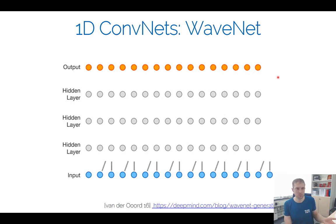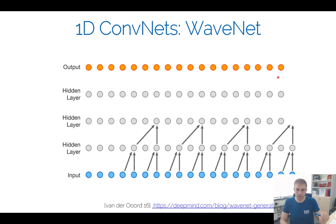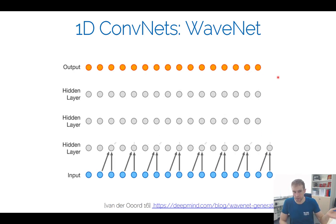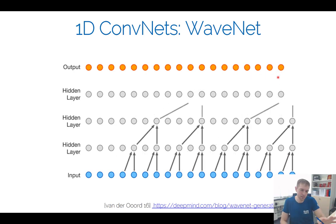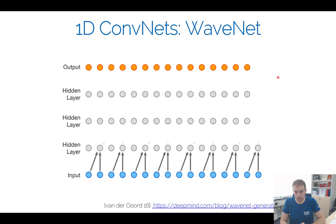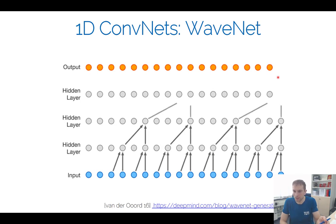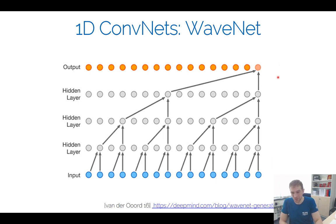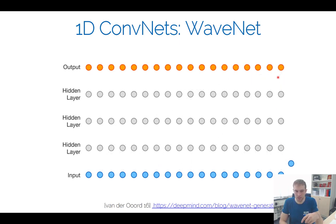In principle, the idea of running 1D convolutions on the audio signal and having an autoregressive model — basically modeling the probabilities and predicting sample by sample — is a pretty good idea. WaveNet has made a lot of impact. Variations of it are basically in the Google Assistant, and text-to-speech systems use architectures like that today. The quality is actually pretty decent.